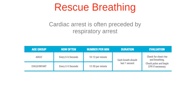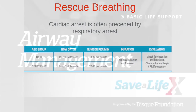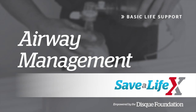Adults should receive a breath every five to six seconds, while children should receive one every three to five seconds. Begin CPR if the pulse is slowed or stopped. Please take the time to read the table in your manual. That's all for airway management; next we will discuss our last topic, relief of choking.